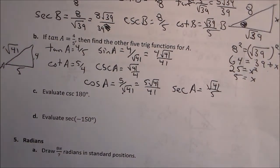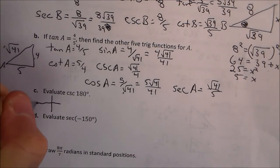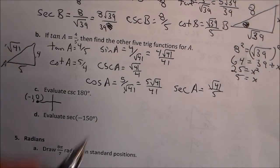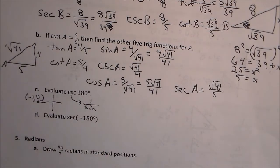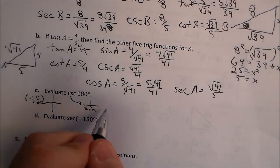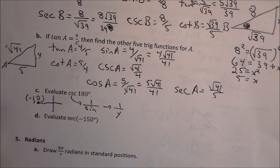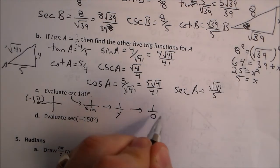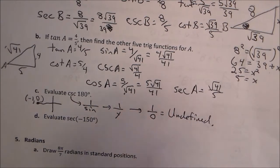Now cosecant of 180 degrees. At 180 degrees, the coordinate is (negative 1, 0). Cosecant is 1 over sine, and sine is the y-value, so it's 1 over y. The y-value here is 0, so it's 1 over 0, which is undefined because we cannot divide by 0.